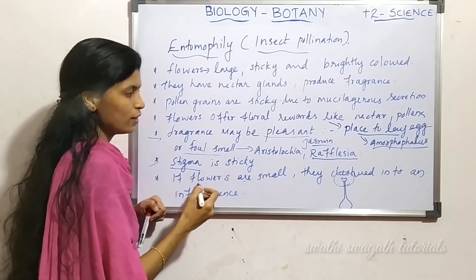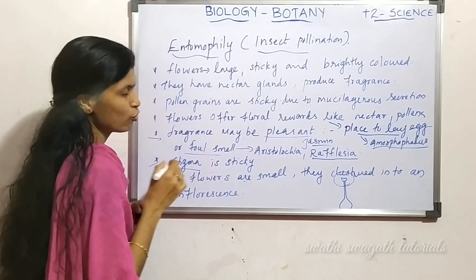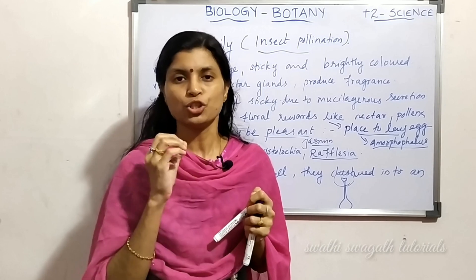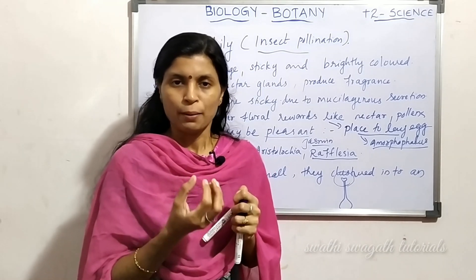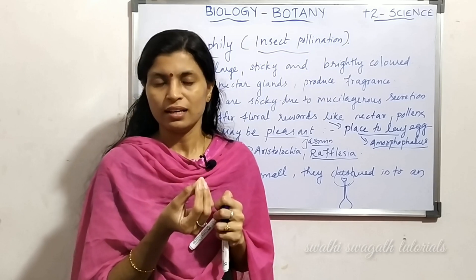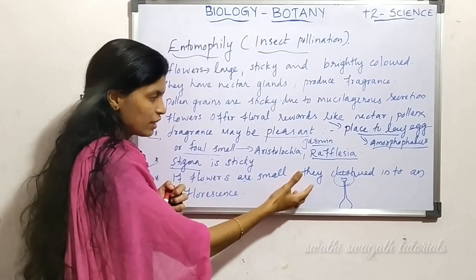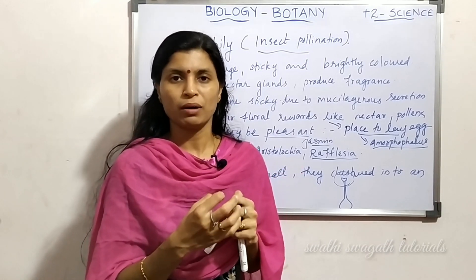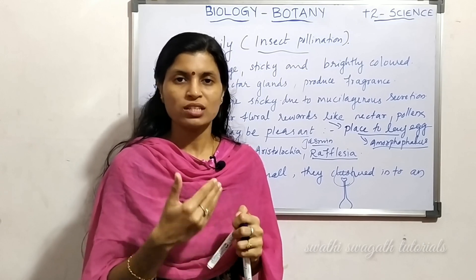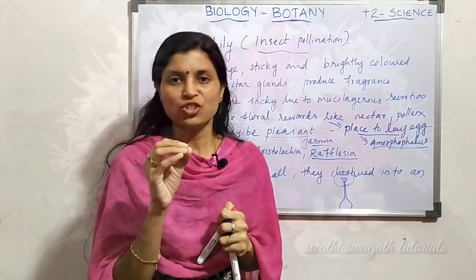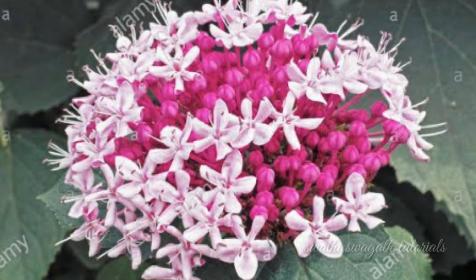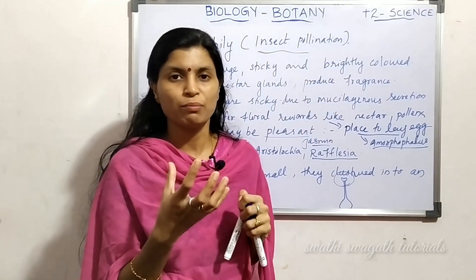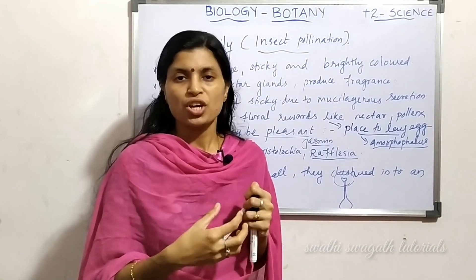If flowers are small, they are clustered into an inflorescence. Normally, entomophilous flowers are large, showy, and colorful. But if flowers are small in size, they form a cluster or group of flowers called an inflorescence — flowers on a common axis — which helps attract pollinating agents.